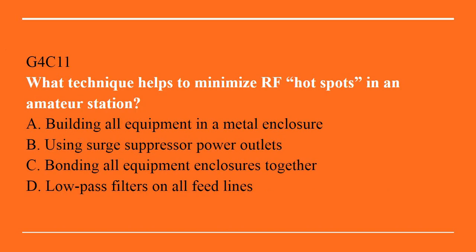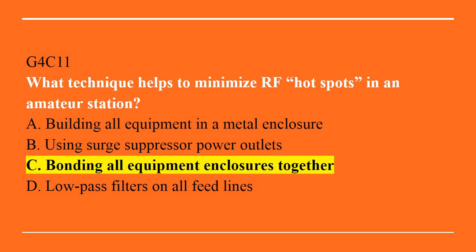G4C11: What technique helps to minimize RF hotspots in an amateur station? A. Building all equipment in a metal enclosure. B. Using surge suppressor power outlets. C. Bonding all equipment enclosures together. Or D. Low pass filters on all feed lines. The correct answer is C. Bonding all equipment enclosures together.